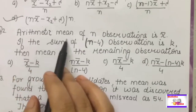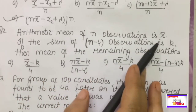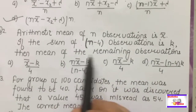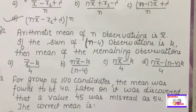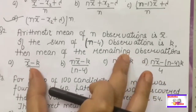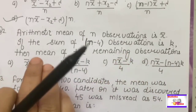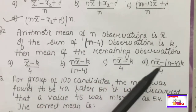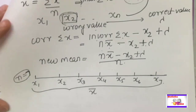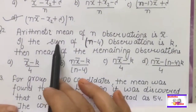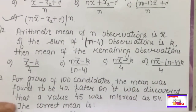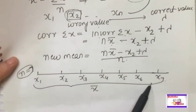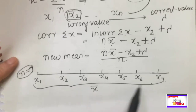Next question: the arithmetic mean of n observations is x̄. If the sum of (n-4) observations is k, find the mean of the remaining observations. This is a very good question and we will solve it using numbers for better understanding. So suppose n = 7; we have 7 observations with mean x̄.